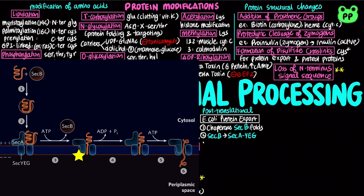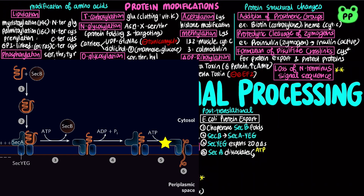SEC-B is released, and SEC-A inserts itself into the membrane, forcing about 20 amino acid residues of the protein to be exported through SEC-YEG. SEC-A then hydrolyzes ATP, causing it to withdraw from the membrane and release the polypeptide. SEC-A binds another ATP, and the next stretch of 20 amino acid residues is pushed across the membrane through the SEC-YEG complex. These steps are repeated until the entire protein passes through.